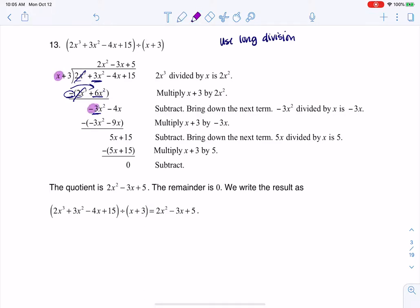...what do I need to multiply x by to get to negative 3x squared? Again, it's always these lead terms. And what I need to multiply x by to get to negative 3x squared is negative 3x.